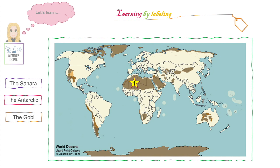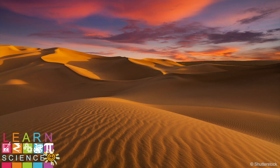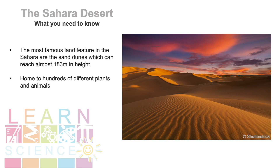That's right, it's the Sahara. The Sahara Desert is the third largest desert in the world and is found on the continent of Africa. One of the most famous land features in the Sahara are the sand dunes which can reach almost 183 metres in height. However, they only cover around 15% of the entire desert. Despite being quite a harsh environment, the Sahara is home to hundreds of different plants and animals.